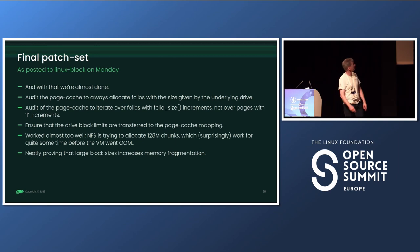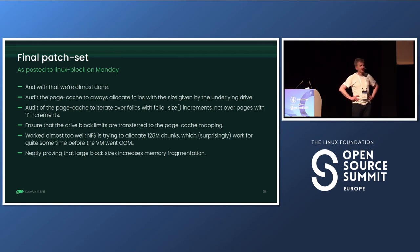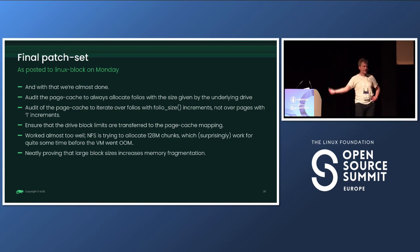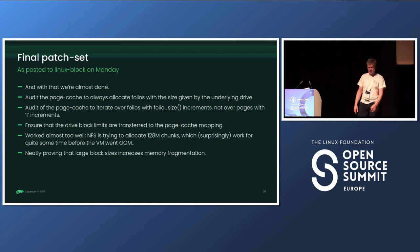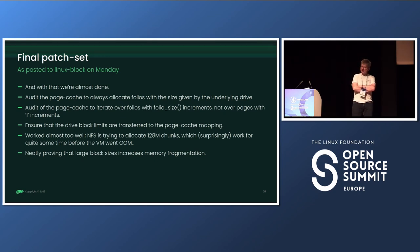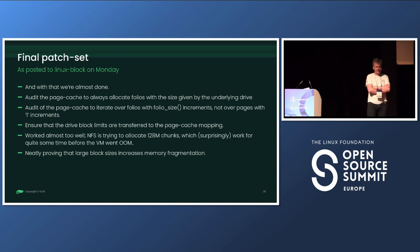The page cache needs to be ordered to allocate folios, ensuring everything increments by the folio size rather than page size. We also need an interface to transfer block limits from the driver to the page cache. The first patch I did also used NFS, and it turns out NFS tries to transfer really large chunks — like 128MB — which worked for a while until the system ran out of memory, neatly proving that large blocks leads to higher memory fragmentation.